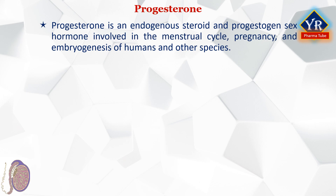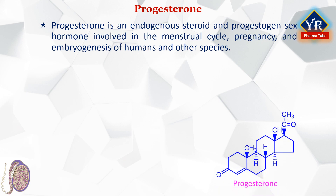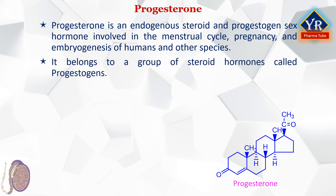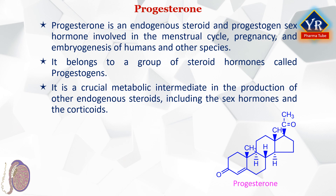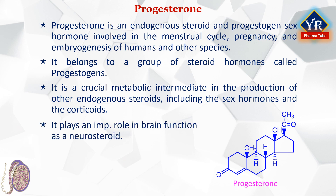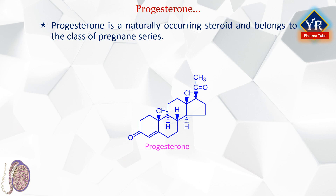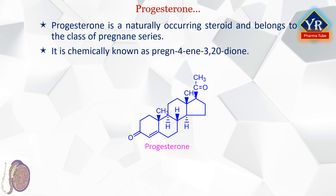Progesterone is an endogenous steroid and progestogen sex hormone involved in the menstrual cycle, pregnancy, and embryogenesis of humans and other species. It belongs to a group of steroid hormones called progestogens and is the major progestogen in the body. It is also a crucial metabolic intermediate in the production of other endogenous steroids including the sex hormones and the corticoids, and plays an important role in brain function as a neurosteroid. Progesterone is a naturally occurring steroid and belongs to the class of pregnane series of steroids. Thus, it is chemically known as pregn-4-ene-3,20-dione. It has a double bond between C4 and C5 positions and two ketone groups, that is 3,20-dione: one at the C3 position and the other at the C20 position.